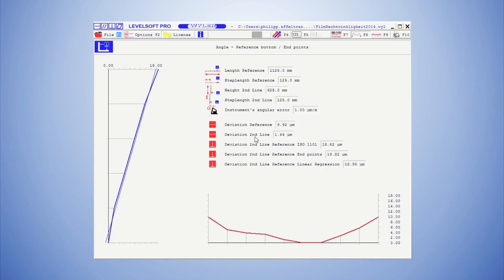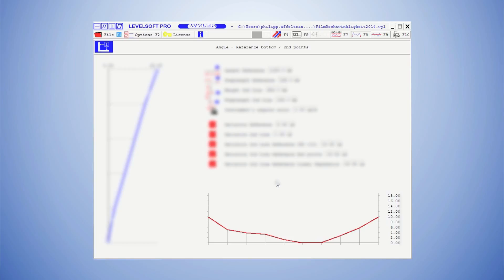The measurement gives the following result. The horizontal guideway, which is the reference, is shown to the right with a red line. It has a straightness error of 9.92 micrometers. The vertical guideway, shown to the left in blue, has a straightness error of 1.64 micrometers.